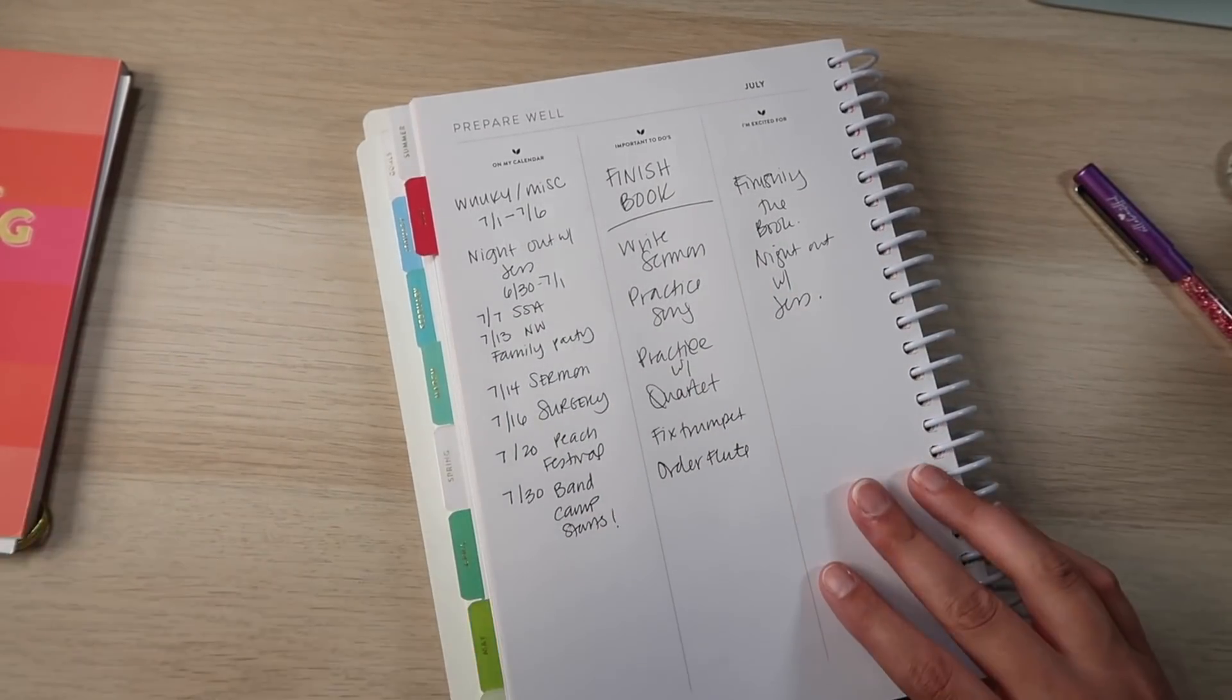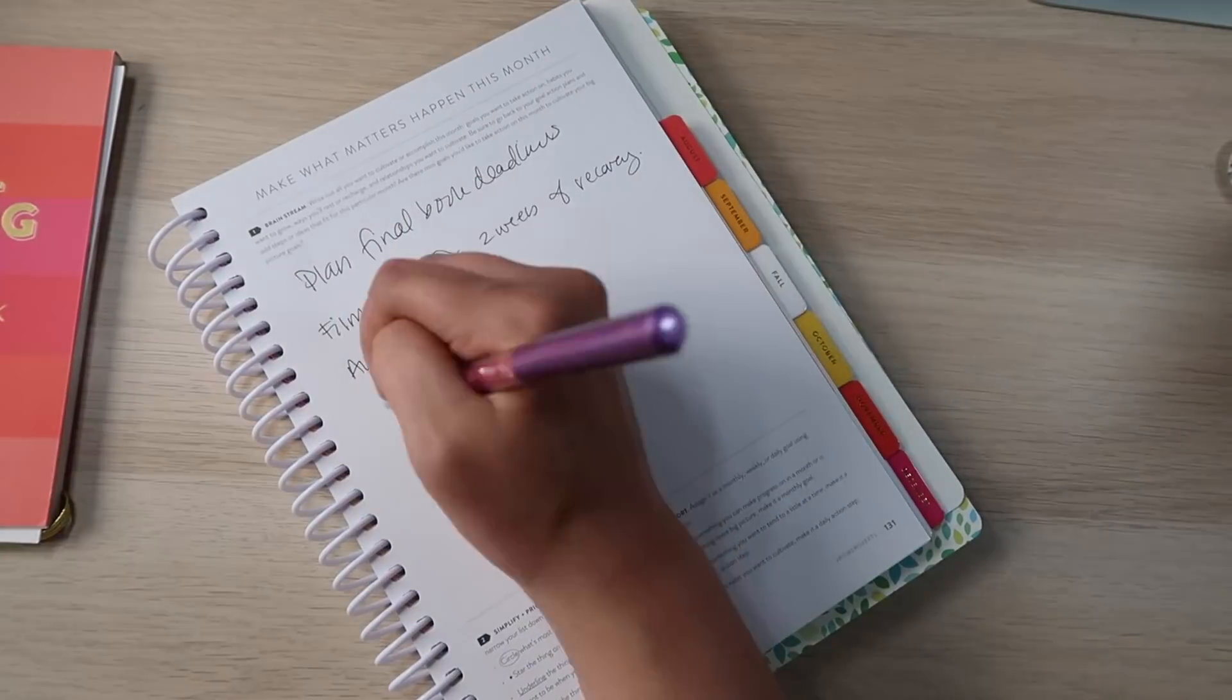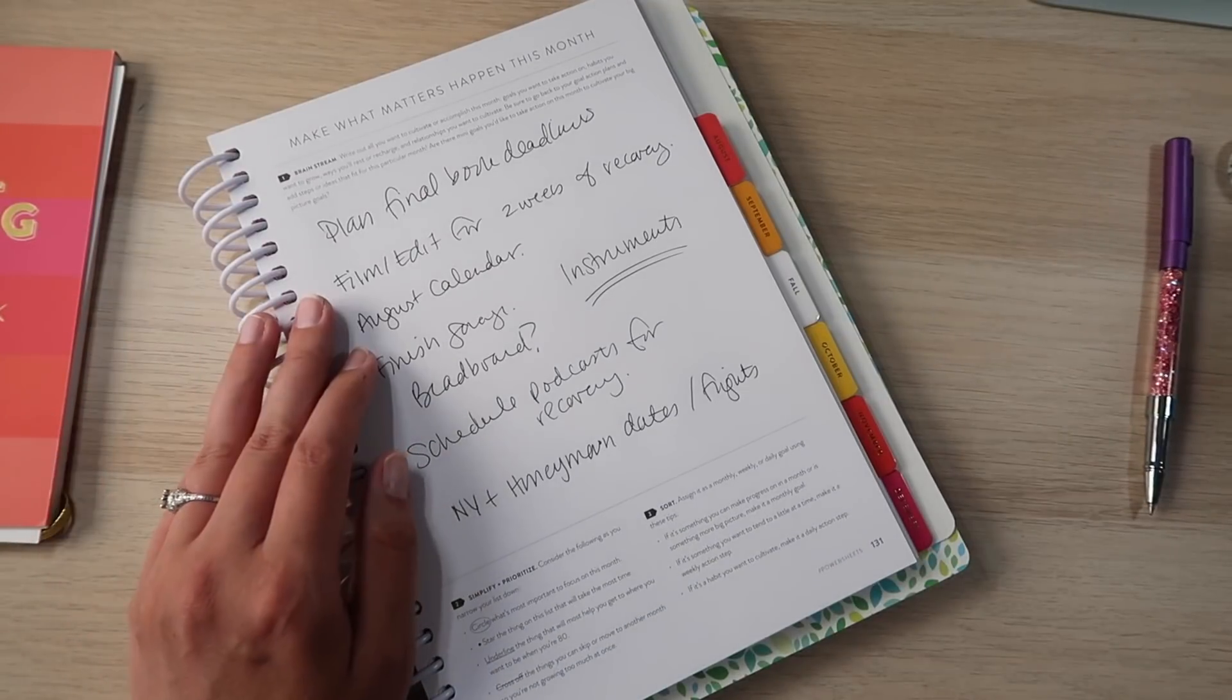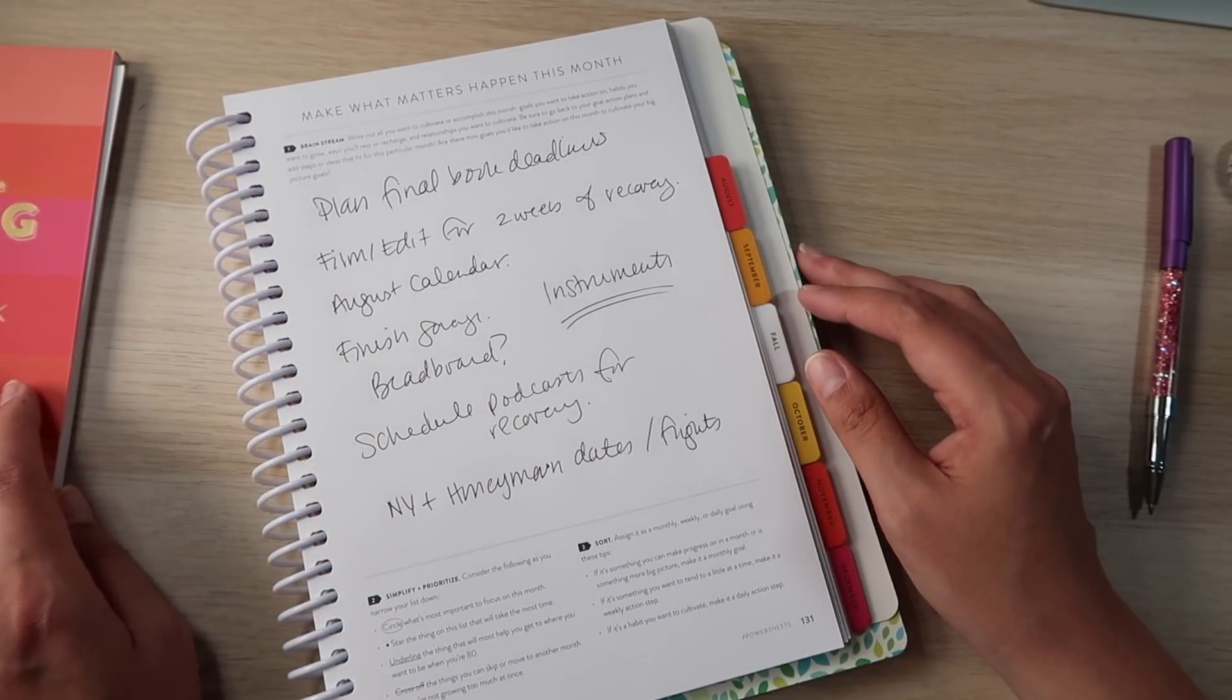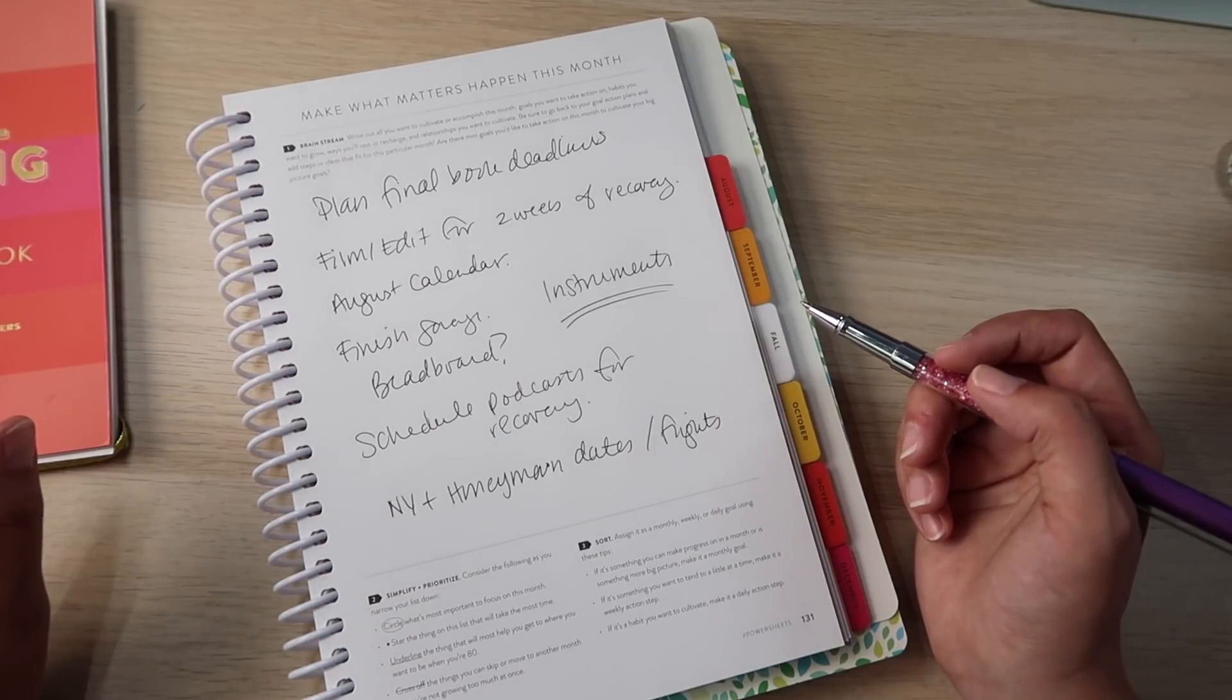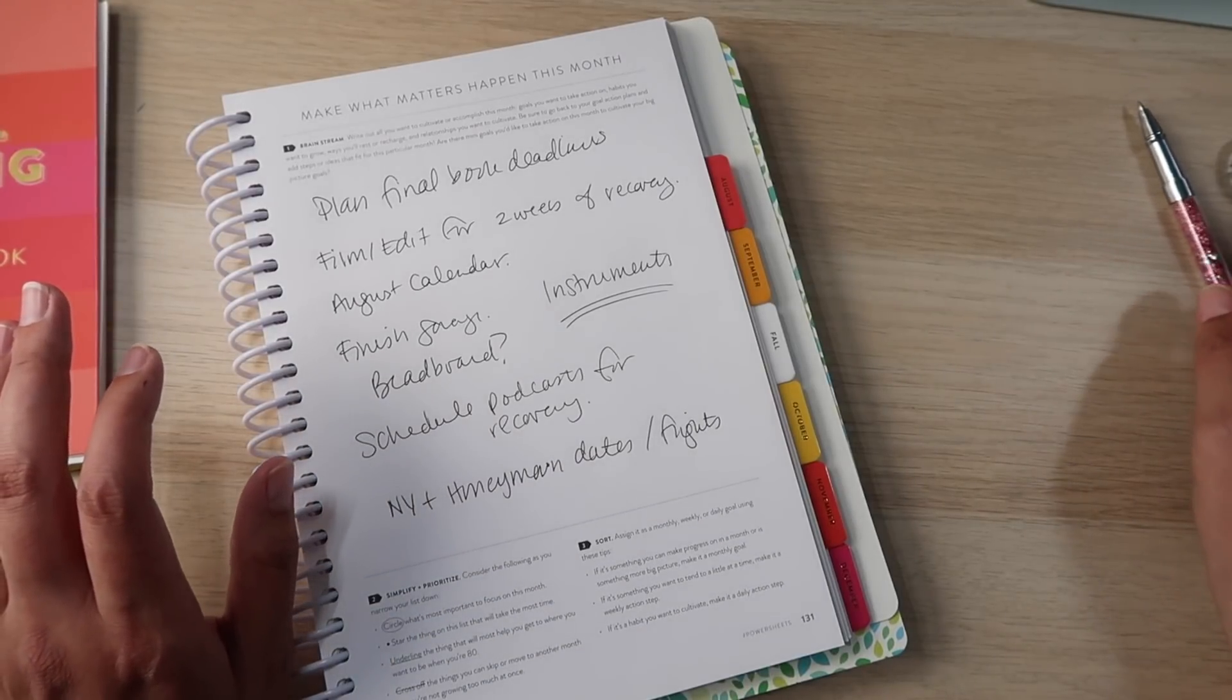All right. I don't have a ton of stuff on this brain stream, but everything on here needs to get done. And I think it's because I've been so focused on what needs to get done in July that that's all I can spit out for this month. So planning my final book deadlines, getting the filming and the podcasting done for the time I'm going to be recovering, the kids' instruments, picking our dates for New York and potentially the honeymoon. I guess this would be one that's not necessary, but we do have to get the New York dates picked and ideally picking the honeymoon dates as well. We think we know where we're going, maybe. Getting all August calendar done up front so I know what's coming for me when my surgery is over. And then the garage and the beadboard, both things that don't have to get done, but I would really like them to get done and there should be a little bit of time for that, maybe. Okay, time for the tending list. I'm just going to get this done and then we will talk about it.